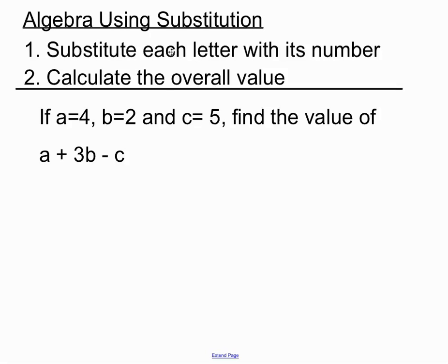So step 1 is to substitute each letter and we're going to write it directly underneath. We're going to substitute each letter with its value, with its number that's given to us in the question. Now A is 4 there, so we're going to write a 4 directly under the A. So we've substituted that in.